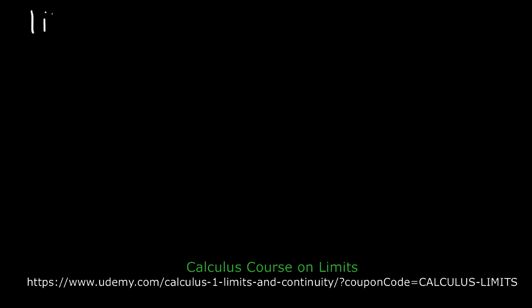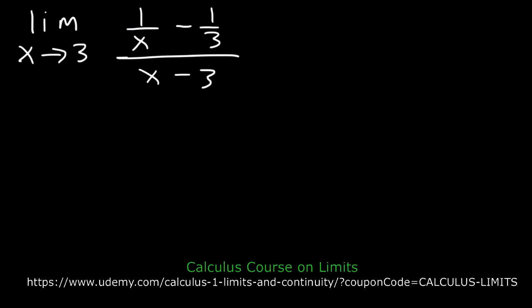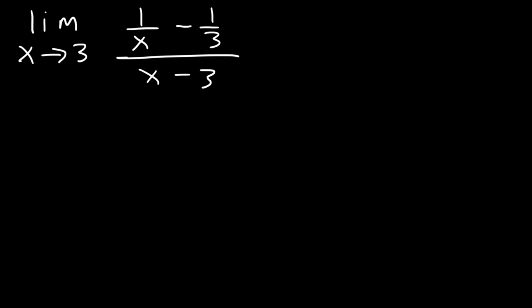Now let's talk about the limit of rational functions. Let's find the limit as x approaches 3 of 1 over x minus 1 over 3, divided by x minus 3. We cannot use direct substitution — the denominator gives 3 minus 3 which is 0, so it's undefined. What we need to do is multiply the top and the bottom by the common denominator of these two fractions, which is 3x.